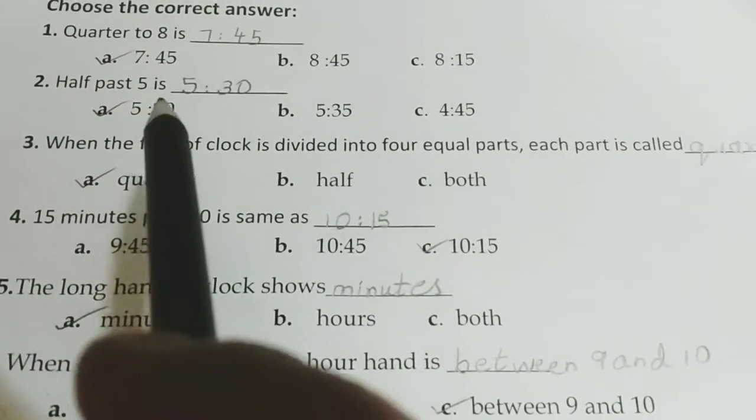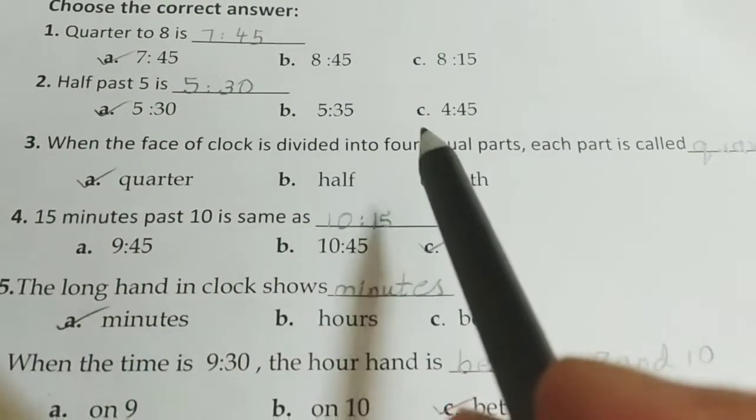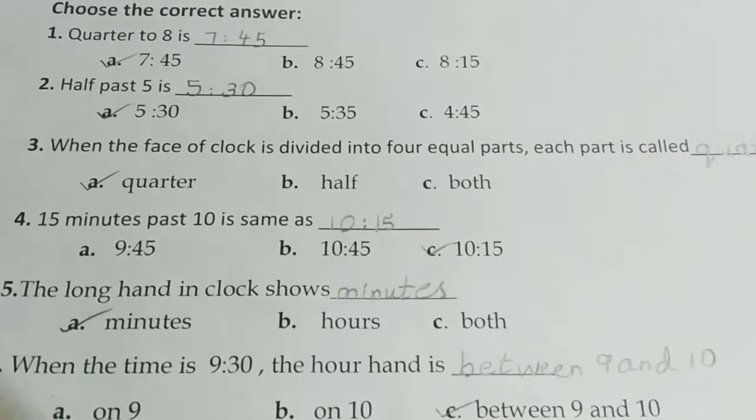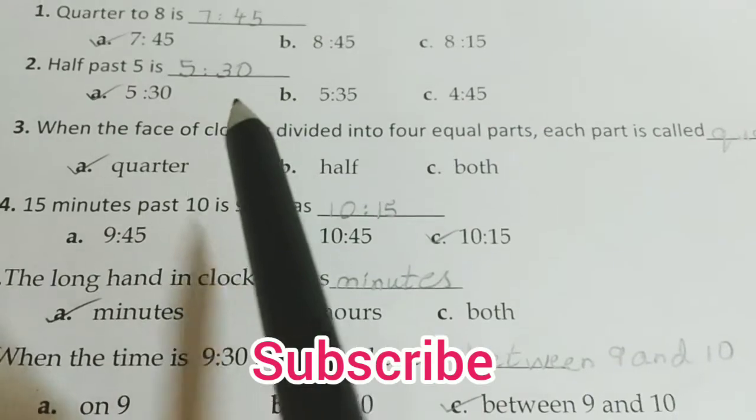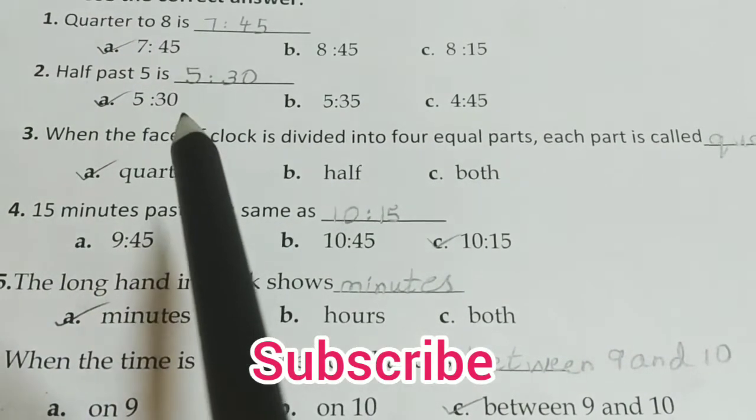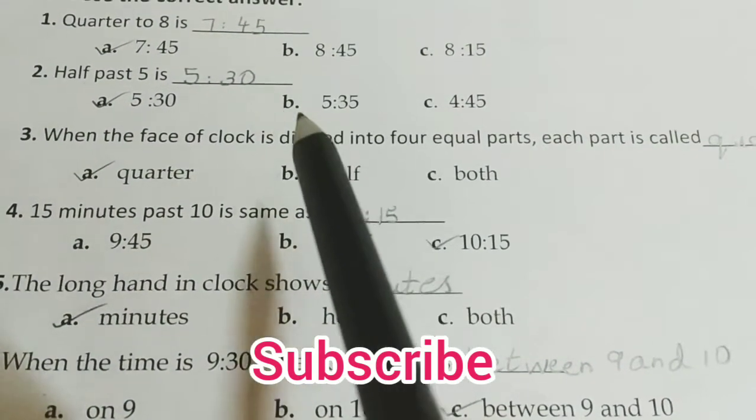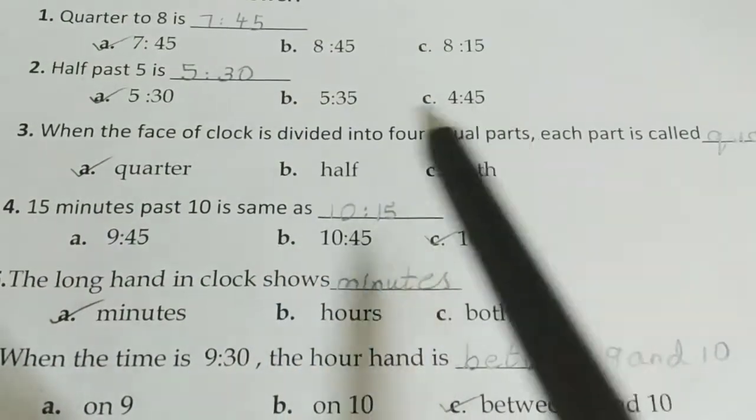Half past 5 is dash. Half past 5. So half means in time 30 minutes. So 5.30 is the correct answer. 5 here option A, B, C is given. Option A is the correct answer.